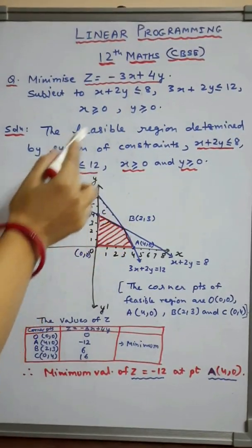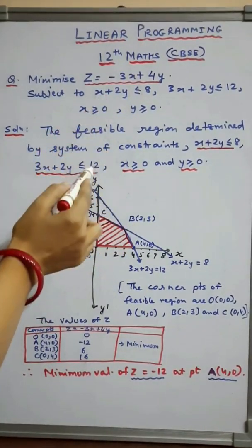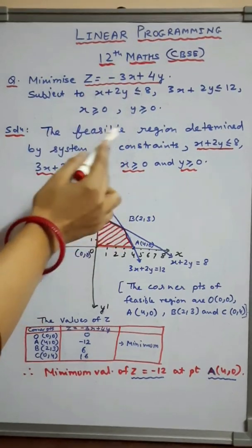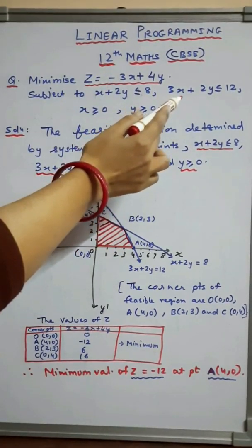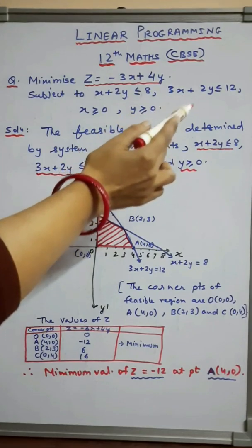Putting these values: if we put x = 0 here, we will get y = 4. Similarly, if we put the value of y = 0, we will get 6.